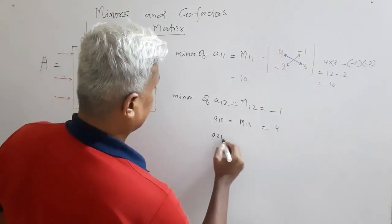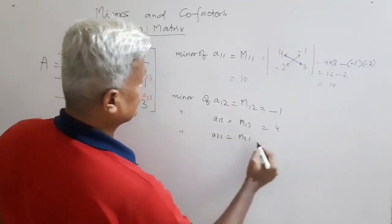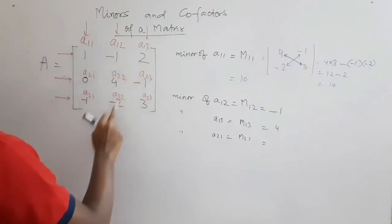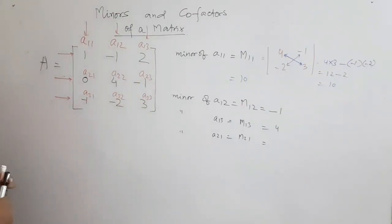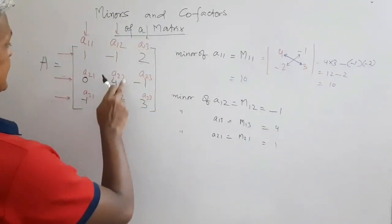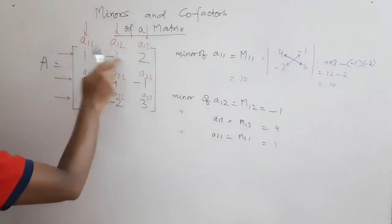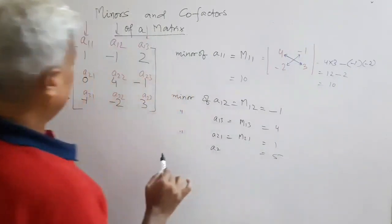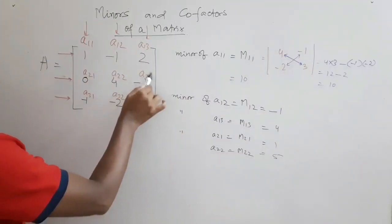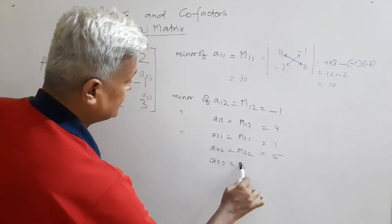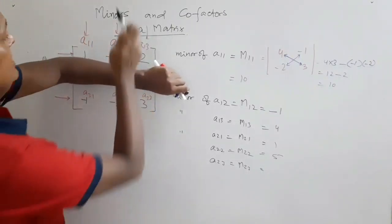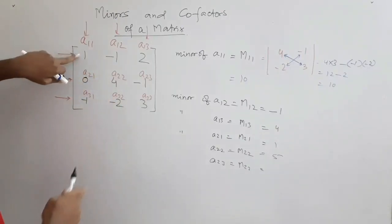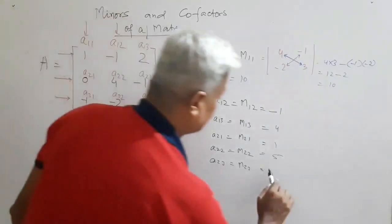For M21, cover the second row and first column, leaving minus 1, 2, minus 2, 3. Determinant: minus 3 minus (minus 4) = minus 3 plus 4 = 1. For M22, cover second row and second column, leaving 1, 2, minus 1, 3. Determinant: 3 minus (minus 2) = 5. For M23, cover second row and third column, leaving 1, minus 1, minus 1, 2. Determinant: 1 times 2 minus (minus 1 times minus 1) = 2 minus 1 = minus 3... actually minus 2 minus (minus 1) = minus 3.